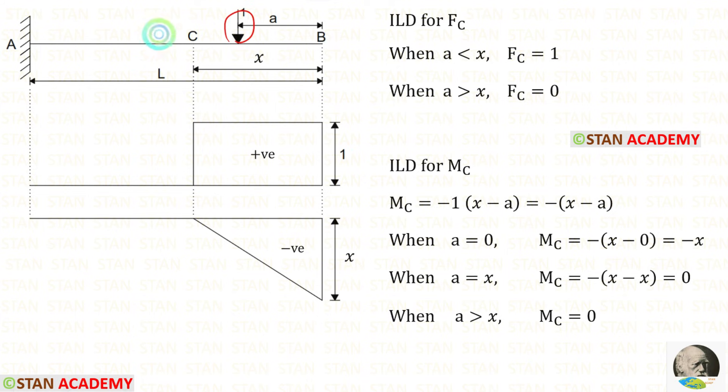When the unit load is just left of C, you can see that in the portion CB, there is no load. So when the unit load moves from C to A, the moment at C will be 0. Using this data, we can draw this diagram.